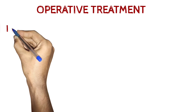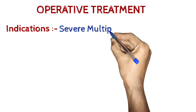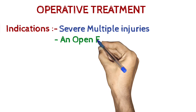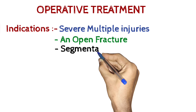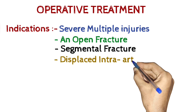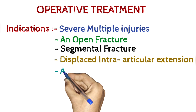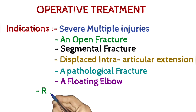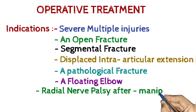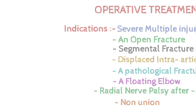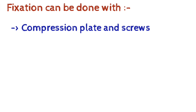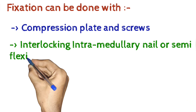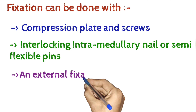Operative Treatment — Indications: severe multiple injuries, open fracture, segmental fracture, displaced intraarticular extension, pathological fracture, floating elbow, radial nerve palsy after manipulation, and non-union. Fixation can be done with compression plate and screws, interlocking intramedullary nail, semi-flexible pins, or external fixation.